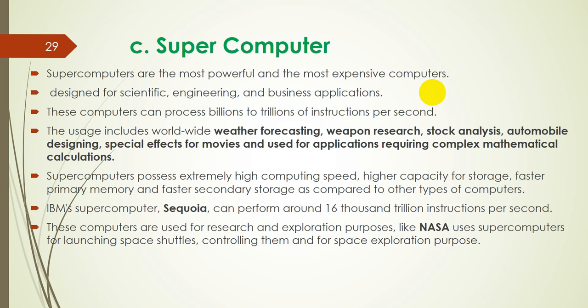Supercomputers have faster primary memory and faster secondary storage compared to other types of computers. For example, the IBM supercomputer Sequoia can perform around 16,000 trillion instructions per second.